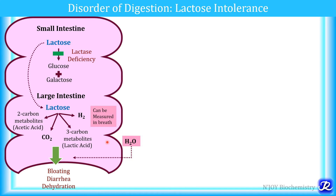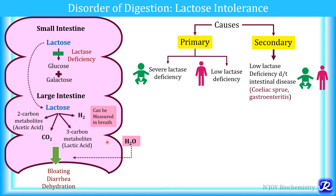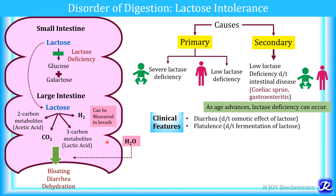The causes of lactose intolerance are primary and secondary. Primary causes include severe lactase deficiency seen in newborns and low lactase deficiency seen in adults. Secondary lactose intolerance is due to low lactase deficiency caused by intestinal diseases like celiac sprue and gastroenteritis. As age advances, lactase deficiency can also occur. Clinical features include diarrhea, flatulence, and abdominal cramps, and due to diarrhea, dehydration can occur.